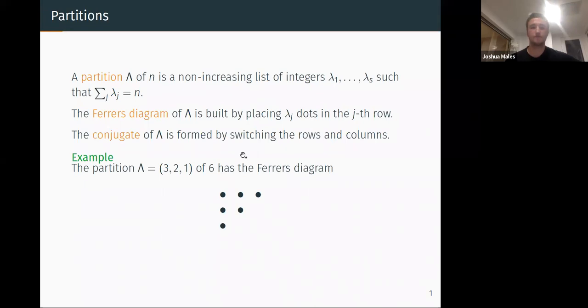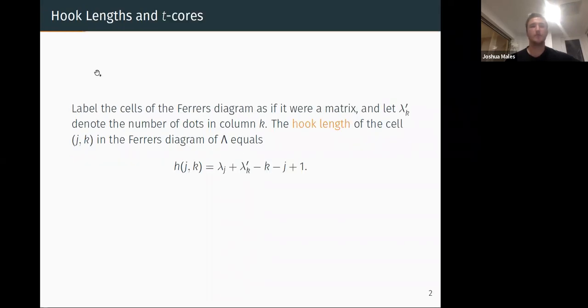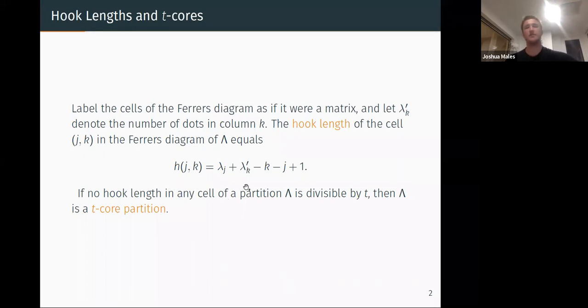So what's the point? What do we do with these? For us we want to look at hook lengths and t-cores. If we label the cell of our Ferrers diagram like a matrix so the top left is (1,1), and then we denote by lambda_k' the number of dots in column k, then the hook length of cell (j,k) in the Ferrers diagram is just given by this formula. This looks a bit messy but it's very natural when we come to look at it. If no hook length in any cell of a partition is divisible by t, then lambda is called a t-core partition.